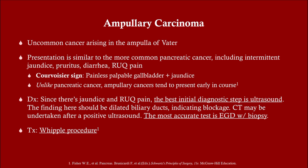Ampullary carcinoma is pretty uncommon, but this is a cancer at the ampulla of Vater. As you can probably already suspect, we don't need to do ERCP for that because we can visualize the ampulla of Vater with ordinary EGD. So the most accurate test is EGD with biopsy. However, if they have symptoms — and they commonly do — you're going to do an ultrasound first, because the symptoms are usually obstructive jaundice or right upper quadrant pain, but most prominently jaundice.